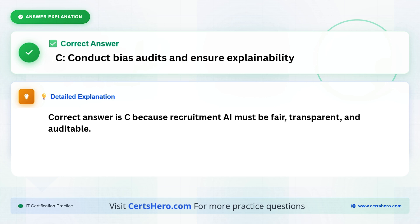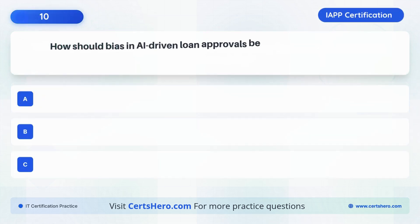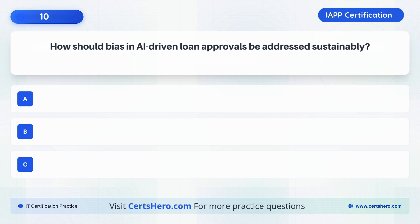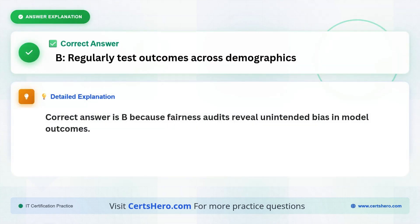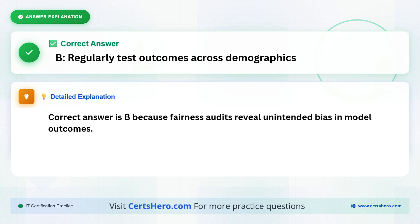How can bias in AI-driven loan approvals be addressed sustainably? A. Limit model access to sensitive data. B. Regularly test outcomes across demographics. C. Remove decision-making autonomy from AI. The correct answer is B: Regularly test outcomes across demographics, because fairness audits reveal unintended bias in model outcomes.